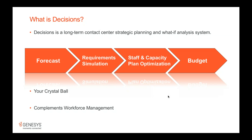Then we do four steps. We forecast all the things that go into a plan: volumes, of course, but also handle times, sick times, agent attrition, and outbound contact rates. Then we very accurately determine exactly how many agents you need week over week, or — if you know how many agents you expect to have — very accurately tell you what your service levels are, your abandons, cost or revenue, your customer service scores, or profit. Then we take week-over-week staffing requirements and develop a highly efficient just-in-time hiring, overtime, vacation, and training plan.